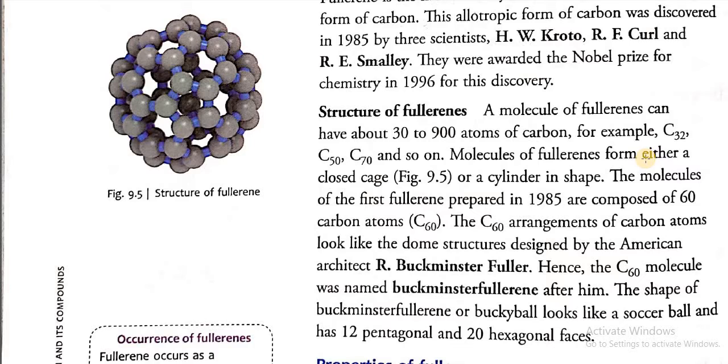Molecules of fullerenes form either a closed cage, so fullerene can form either a closed cage structure or a cylinder in shape. The molecules of the first fullerene prepared in 1985 are composed of 60 carbon atoms.